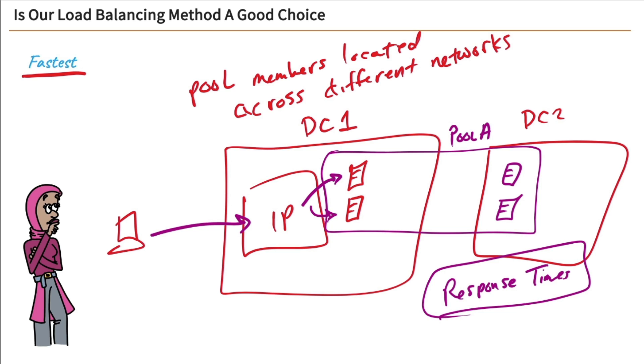Now, obviously, the servers in the same data center as the big IP are going to have the fastest response times. These over here in data center two, well, they're going to have a little slower response time, so they're not going to be load balanced to as often. So when you're using this type of setup, you really need to be aware of that.